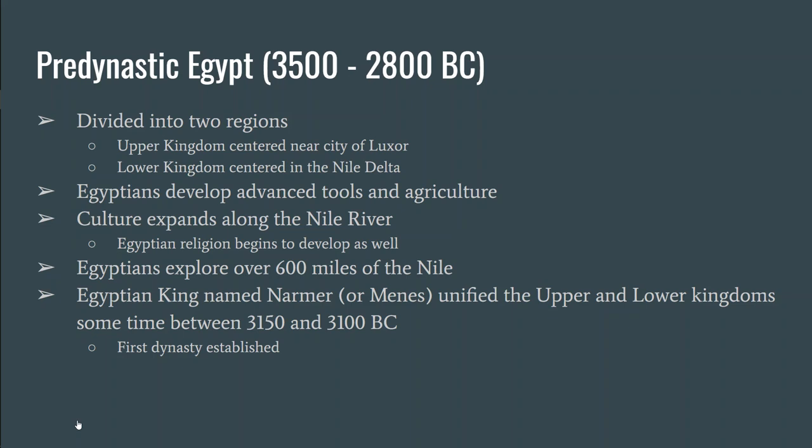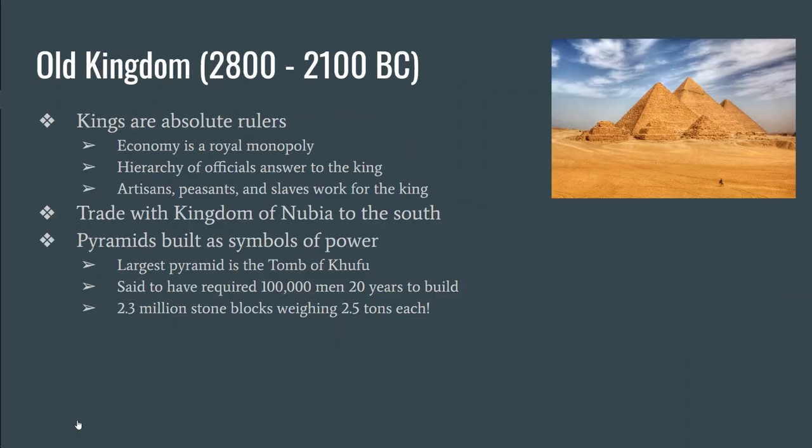Somewhere between 3150 and 3100 BC, an Egyptian king named Narmer — also called Menes depending on the literature — fully unified the upper and lower kingdoms and established what became known as the first dynasty. Once all of Egypt was united, that became known as the Old Kingdom, and this is where most of the important things happen. First of all, the kings became absolute rulers.